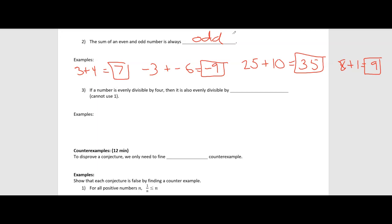Last one for this section. Number three, if a number is evenly divisible by four, then it is also evenly divisible by blank. And we can't use one because every number is divisible by one. So let's pick some numbers evenly divisible by four evenly divisible just means we're going to get an integer as our answer. So we're not going to get a decimal. So 16 is divisible by four, 12 divisible by four, negative 24 is divisible by four, 36 is divisible by four, 40, four, eight, and we could keep going, both with positive and negative numbers.